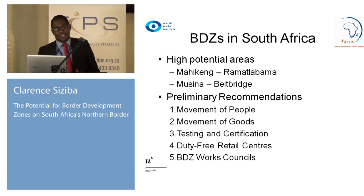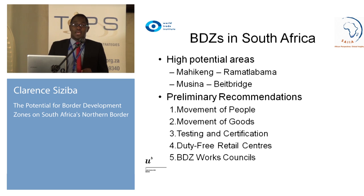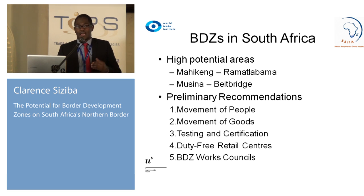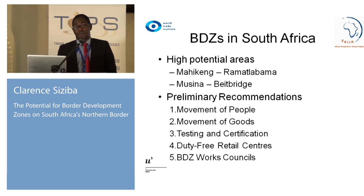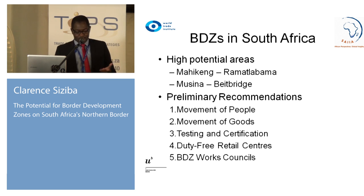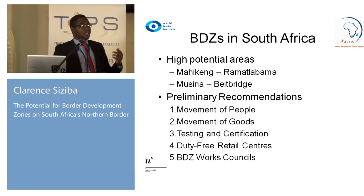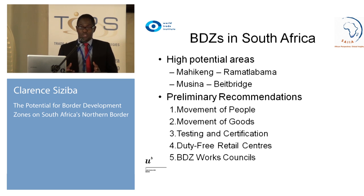One zone between Mahikeng and Ramatlabama, and the other at Musina and Pitebridge. At the Mahikeng border, you have Botswana, which depends heavily on imports from South Africa. On the other side of the border there are a number of villages, and the closest big town is Lobatse — not far from Gaborone. Across the border at Mahikeng, only 29 kilometers from the border, you have a fairly well-developed town with light manufacturing, and there are calls to establish a special economic zone there. Our idea is that this should go further, broadened to include a border development strategy that straddles both borders.